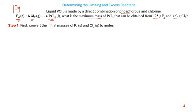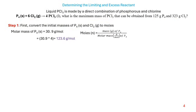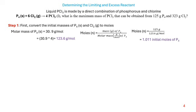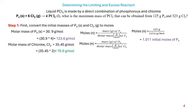Step 1: convert the initial masses of phosphorus and chlorine to moles. The molar mass of phosphorus is 30.9 g/mol. Since phosphorus here exists as P₄, we multiply by 4 to get 123.6 g/mol. Using moles = mass ÷ molar mass, and substituting the actual mass of phosphorus, we get 1.011 as the initial moles of phosphorus.